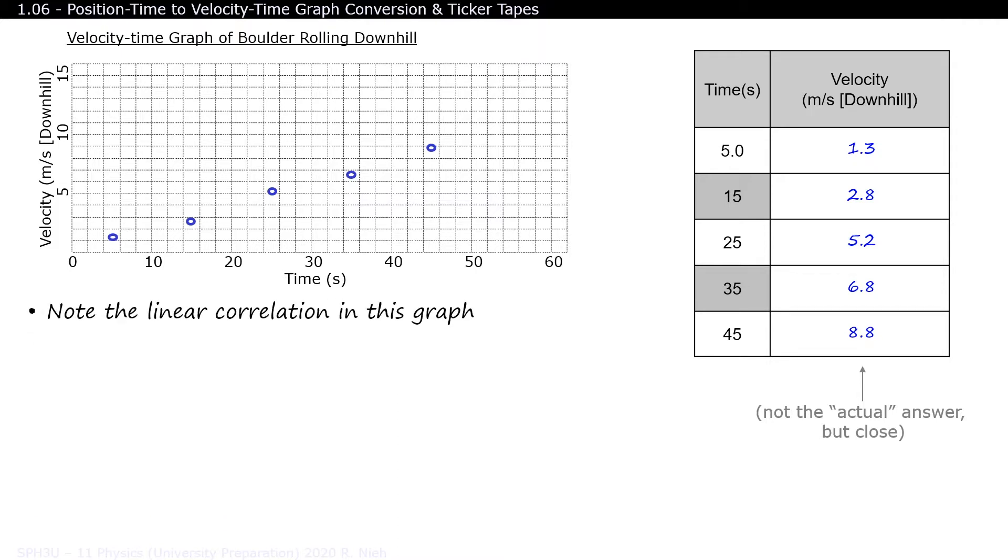The data points appear to form a straight line, so that's why we drew a line of best fit. Any outliers due to earlier measurement errors would have been averaged out.